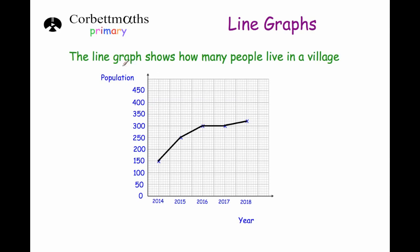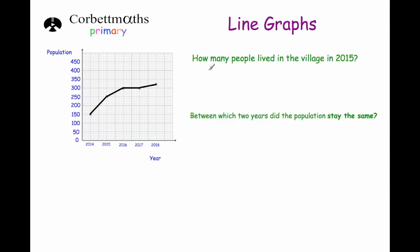Our next question: the line graph shows how many people live in a village, so we've got the population. Population is another word for the number of people that live somewhere. Going along horizontally we've got the years: 2014, 2015, 2016, 2017 and 2018. The first question says: how many people lived in the village in 2015? If we go to 2015, up and across, we can see that 250 people lived in the village in 2015.